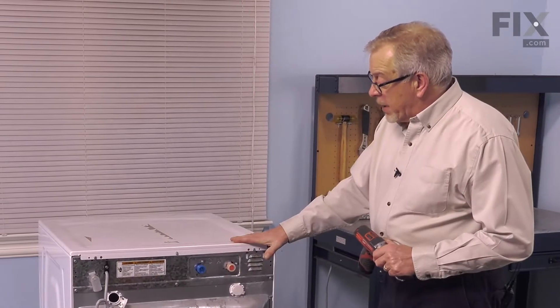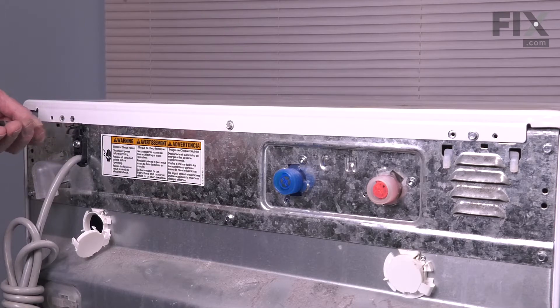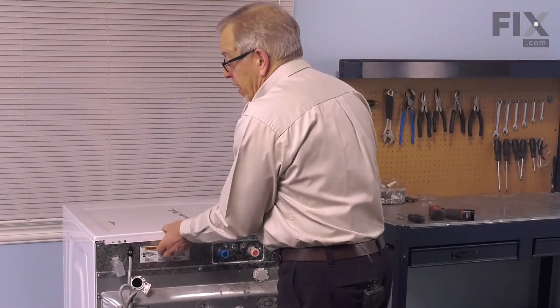Now that we have access to the back of the washer, our next step will be to remove the main top. We simply take out these three-quarter inch hex head screws and then just pull that top back about a half an inch.